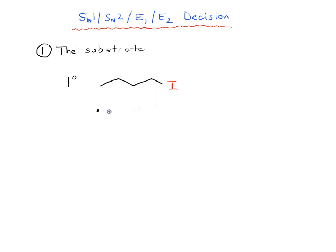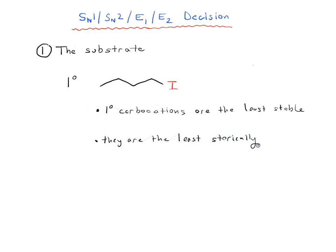Remember, primary carbocations are the least stable, and primary carbons are the least sterically hindered. The reactions that depend heavily on carbocation stability are the SN1 and E1 — the key step in both is formation of a carbocation. So if we see a primary alkyl halide, we can very confidently rule out the SN1 and E1 reactions; it's extremely unlikely we're going to form a primary carbocation.